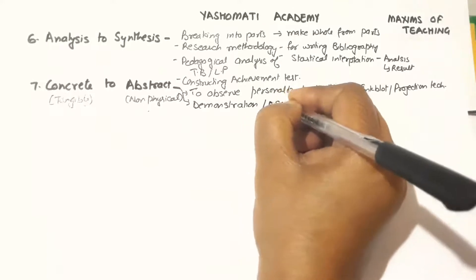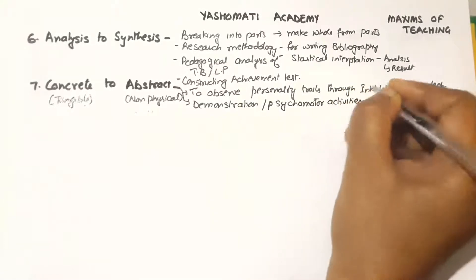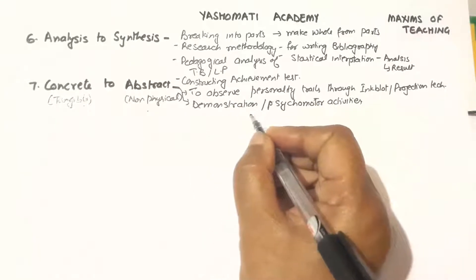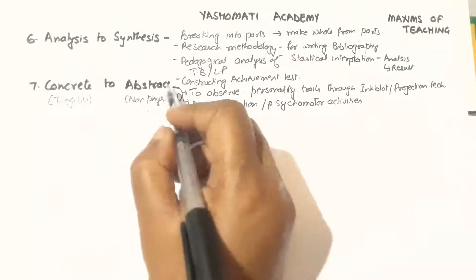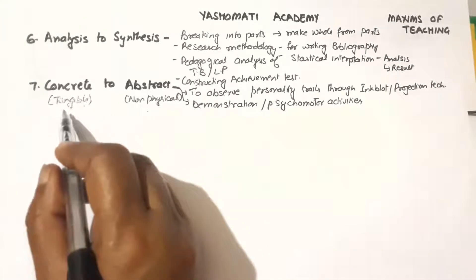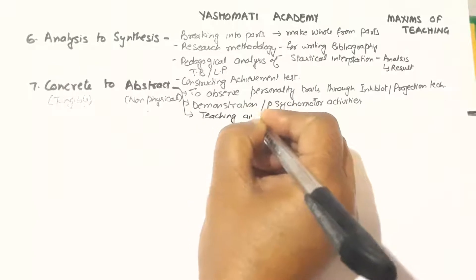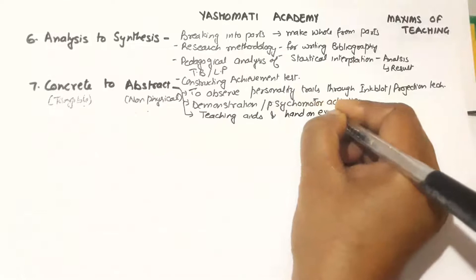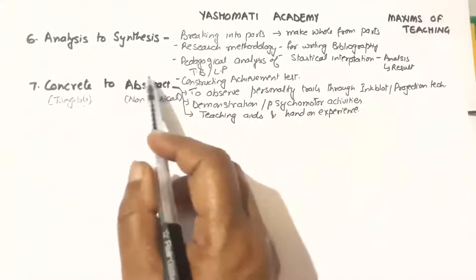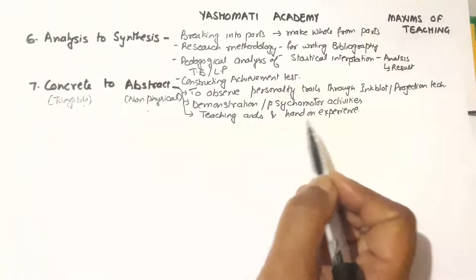This includes psychomotor activities. It is easy for the learner to understand an abstract idea if he is able to see it actually happening, or in concrete form. That is why there is use of teaching aids and hands-on experience. So if you use this maxim when teaching an abstract concept, using some demonstration or psychomotor activity so that learners have hands-on experience, it will be easy for them to understand abstract ideas too.